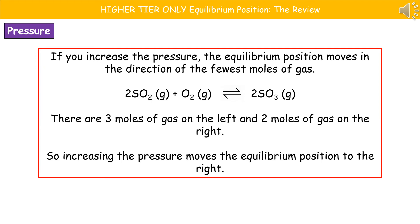One of the conditions we could change is the pressure. If we increase the pressure, the equilibrium position moves in the direction of the fewest moles of gas. You look at the balanced equation and look at the state symbols - we're only concerned with the gas. In this example we've got three moles of gas on the left and two on the right, so if we increase the pressure our equilibrium position moves to the right because there are fewer moles of gas there.